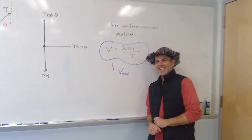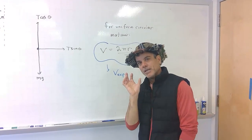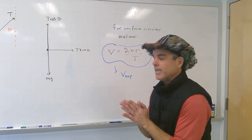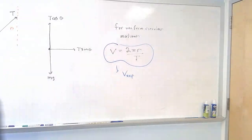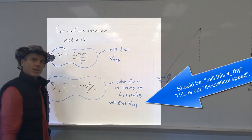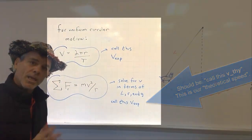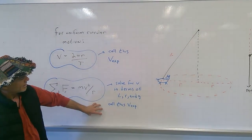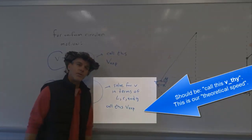Let's come over to the board. For something moving in uniform circular motion — meaning moving in a circular path at constant speed v, circle of constant radius r, period t — the speed is given by 2 pi r divided by the period. We're going to call this our experimental period. We also know that for something moving in a circular path, the sum of the forces in the radial direction, which is towards the center of the circle, is going to be given by mv squared over r.